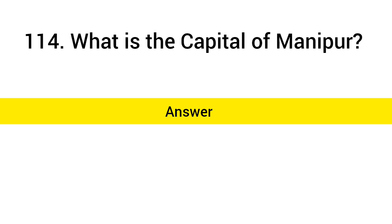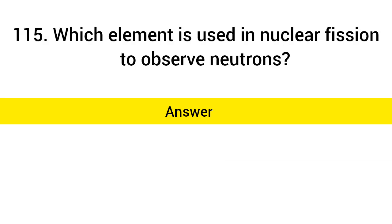What is the capital of Manipur? Answer: Imphal. Which element is used in nuclear fission to absorb neutrons? Answer: Cadmium.